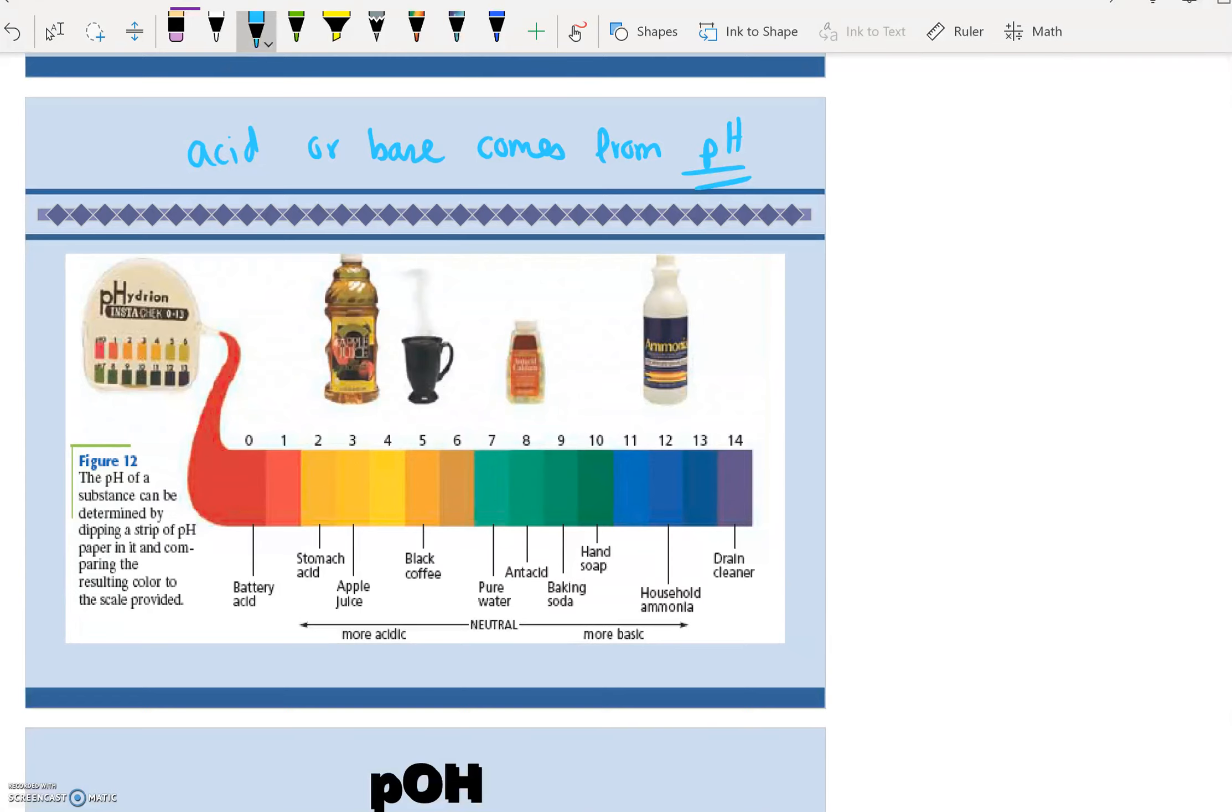The place where it gets really dangerous is when you have high concentrated substances. So like apple juice may have a pH of 3, but we're still able to drink it because it's not a very highly concentrated acidic beverage.